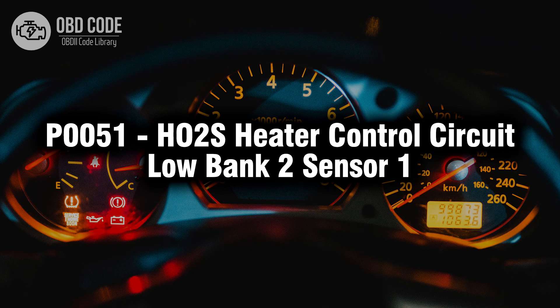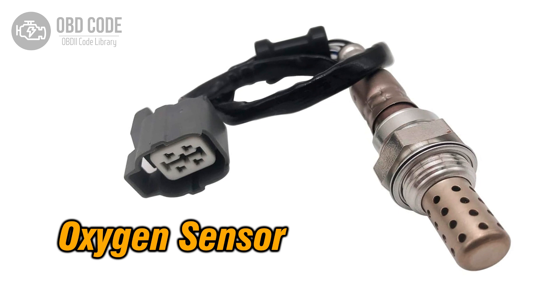Welcome. In this video we will talk about code P0051, its symptoms, causes and possible solutions. The P0051 trouble code is related to the HO2S, heated oxygen sensor, heater control circuit in bank 2, sensor 1. It indicates a potential low voltage issue with the heater control circuit of the oxygen sensor positioned in the exhaust system's second bank and first sensor location. This code is often found in vehicles with advanced emission control systems.